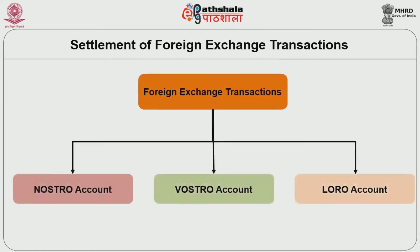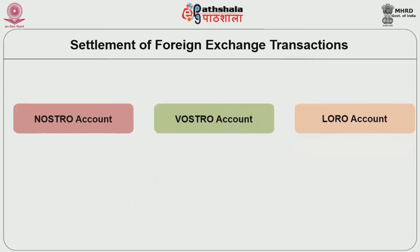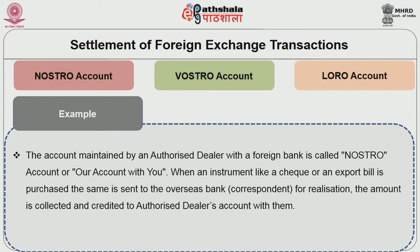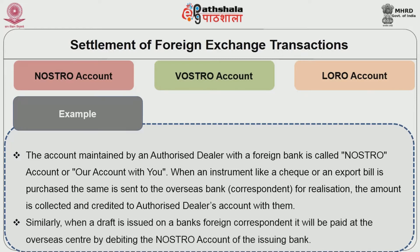Settlements of foreign exchange transactions are made through the following accounts. The first is the Nostro account, meaning 'our account with you.' The account maintained by an authorized dealer with a foreign bank is called the Nostro account. When an instrument like a cheque or export bill is purchased, it is sent to the overseas correspondent bank for realization, and the amount is collected and credited to the authorized dealer's account with them. Similarly, when a draft is issued on a bank's foreign correspondent, it is paid at the overseas center by debiting the Nostro account of the issuing bank.